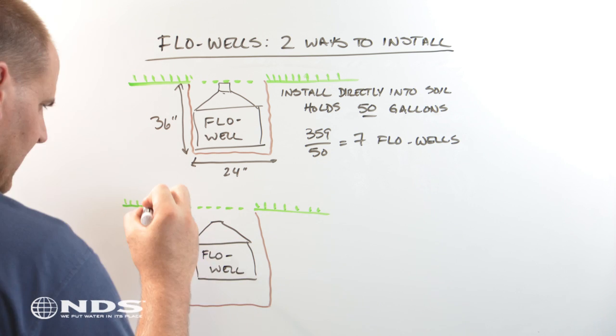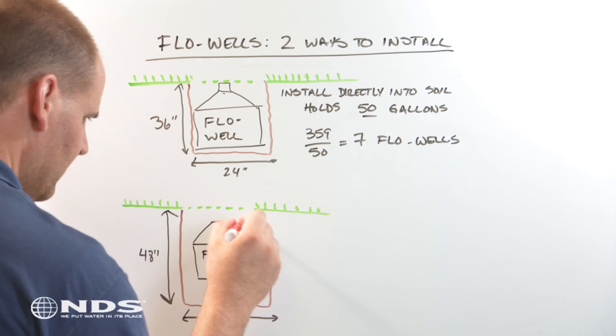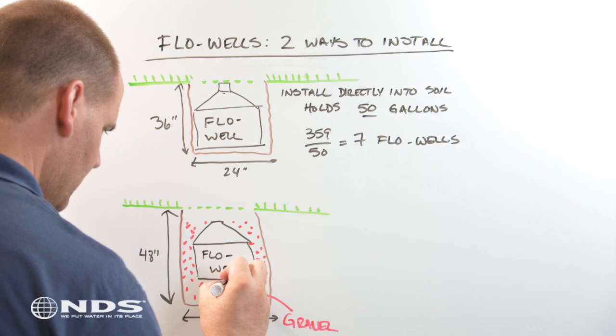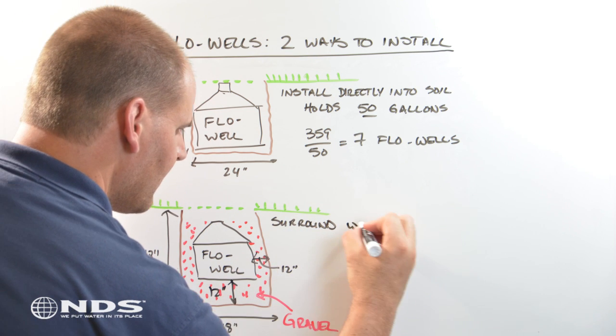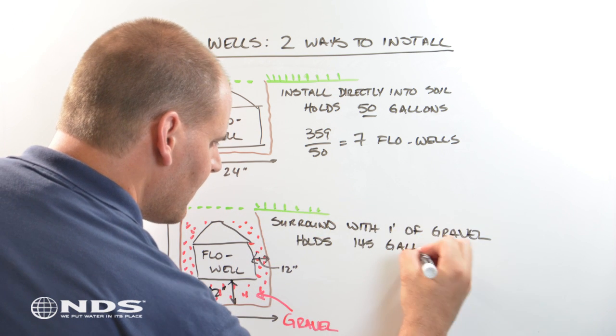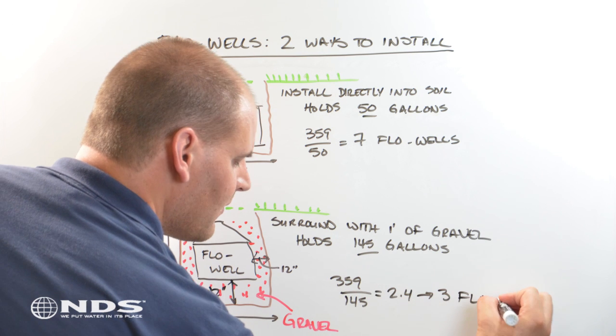If you backfill around the flow well with one foot of gravel, this system will store 145 gallons of water. In this configuration, you would need three flow wells to store 359 gallons of water.